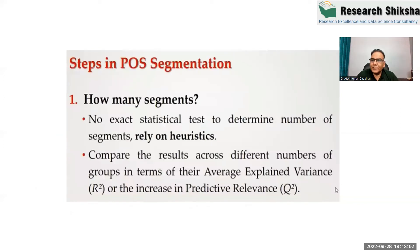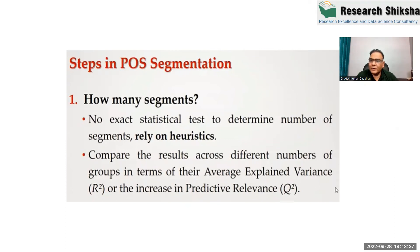The important question is: how many segments should we make? In FIMIX, the maximum limit is the sample size divided by the minimum required sample size. For example, if your sample size is 400 and the largest number of items in a construct is 10, then 400 divided by 10 multiplied by 10. In that way, we can find the maximum limit for the number of segments.